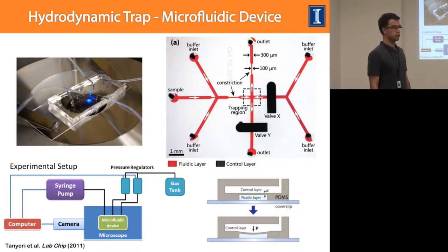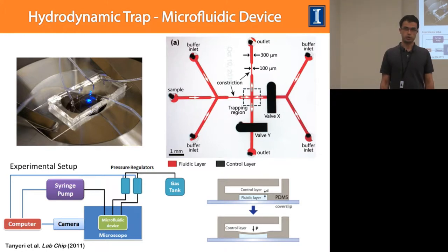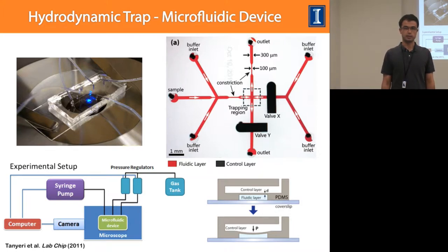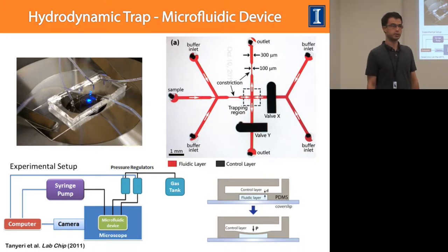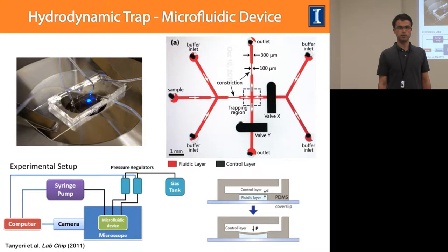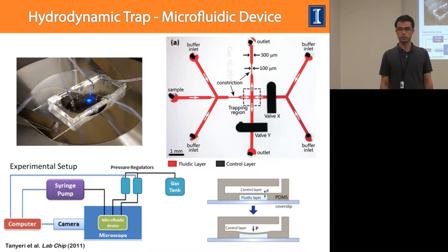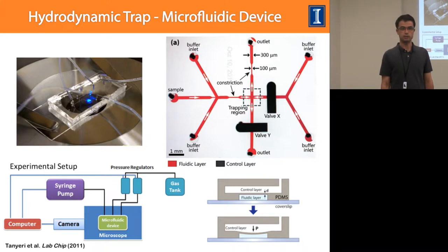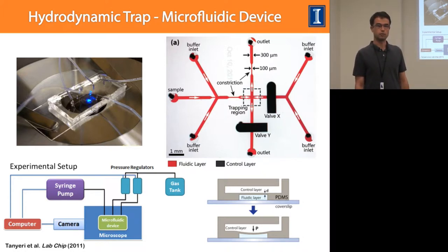I highlight the trapping region with a dashed box. The second layer, shown in black, is a control layer containing pneumatic membrane valves. These membrane valves help control the fluid flow in the fluidic layer. On the bottom right you see the working principle of the membrane valve: a channel sits on top of the fluidic channel, separated by a thin membrane. When pressure is applied on the top layer, it expands and bends the membrane into the fluidic layer, acting as an active valve. We dynamically control this pressure to manipulate the cross-sectional area and thus the flow rate in the fluidic channel.